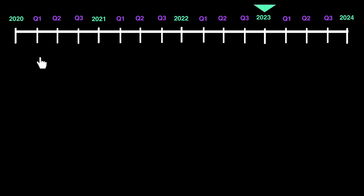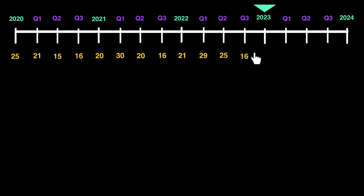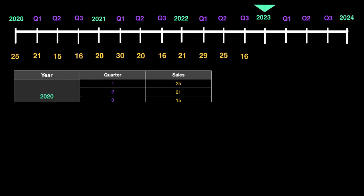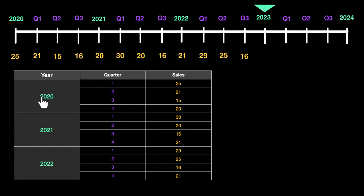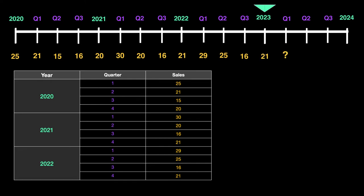Previous to this point, the company would have made sales and recorded them, and those records would be available for use. Let's say these are the numbers: 25,000, 21,000, and so on — these are in thousands. All companies will have this information available and they would make a table out of it. So in 2020 quarter one the sales were 25,000, quarter two 21,000. The company needs to look at this data and determine if it can be used to predict what's going to happen in the future.